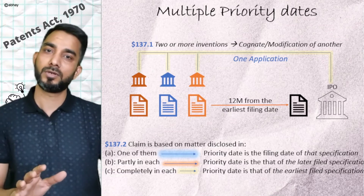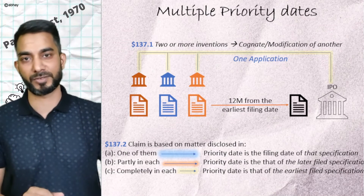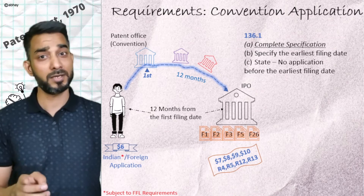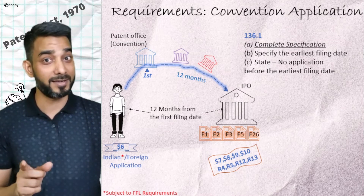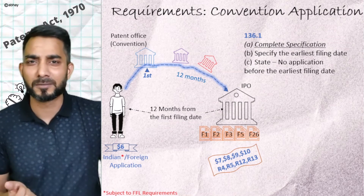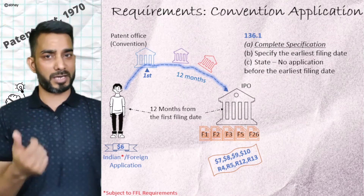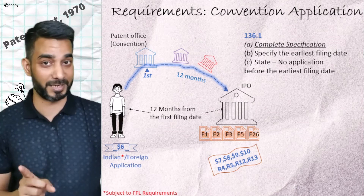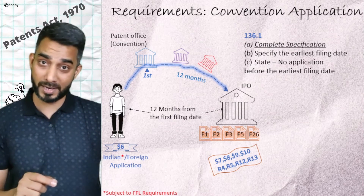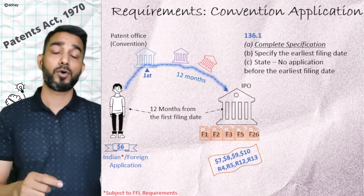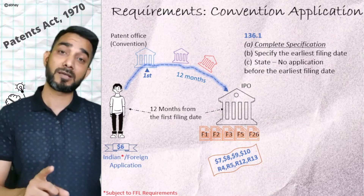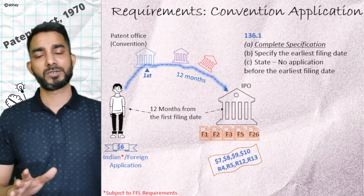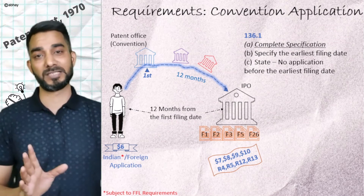Now let's look at the requirements for a convention application. It is filed with the same forms — Form 1, 2, 3, 5, and 26. As per Section 136.1, a convention application has to be associated with a complete specification — no provisional specification is allowed. You are required to specify the date on which it was filed for the very first time in one of the convention countries, and you also need to state that no application was filed before that date — more of a disclaimer.